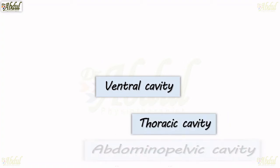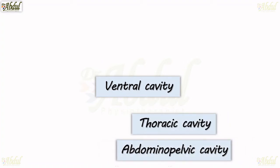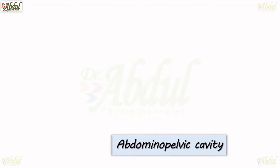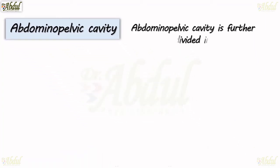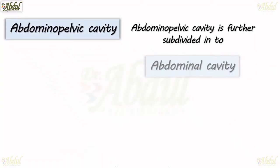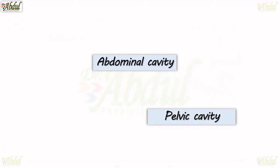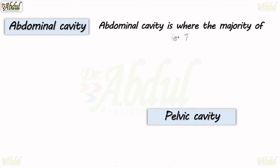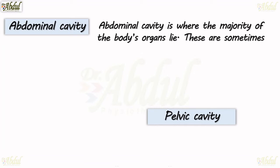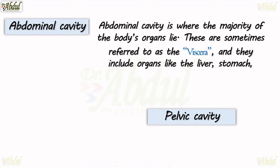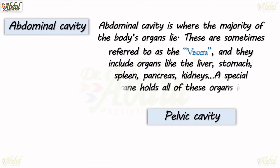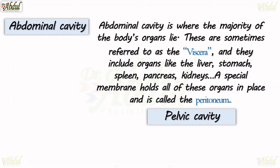Next, the abdominopelvic cavity is further subdivided into the abdominal cavity and the pelvic cavity. The abdominal cavity is where the majority of the body's organs lie. These are sometimes referred to as viscera and include organs like the liver, stomach, spleen, pancreas, and kidneys. A special membrane that holds all of these organs in place is called the peritoneum.